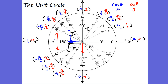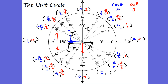In quadrant four, the x values — cosine — are all positive: root three over two, root two over two, one-half. But the y values are negative: negative one-half, negative root two over two, and negative root three over two. That is our unit circle. So if I say cosine of five pi over three, cosine is the first value — that's one-half. If I say sine of seven pi over six, you go to seven pi over six; sine is the second value — negative one-half.